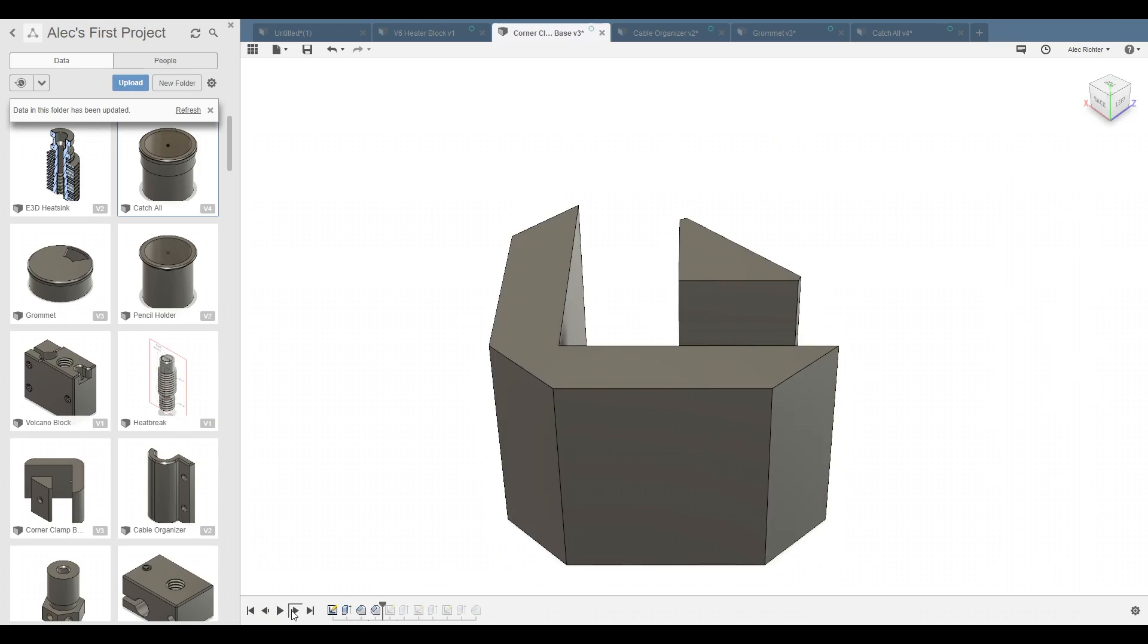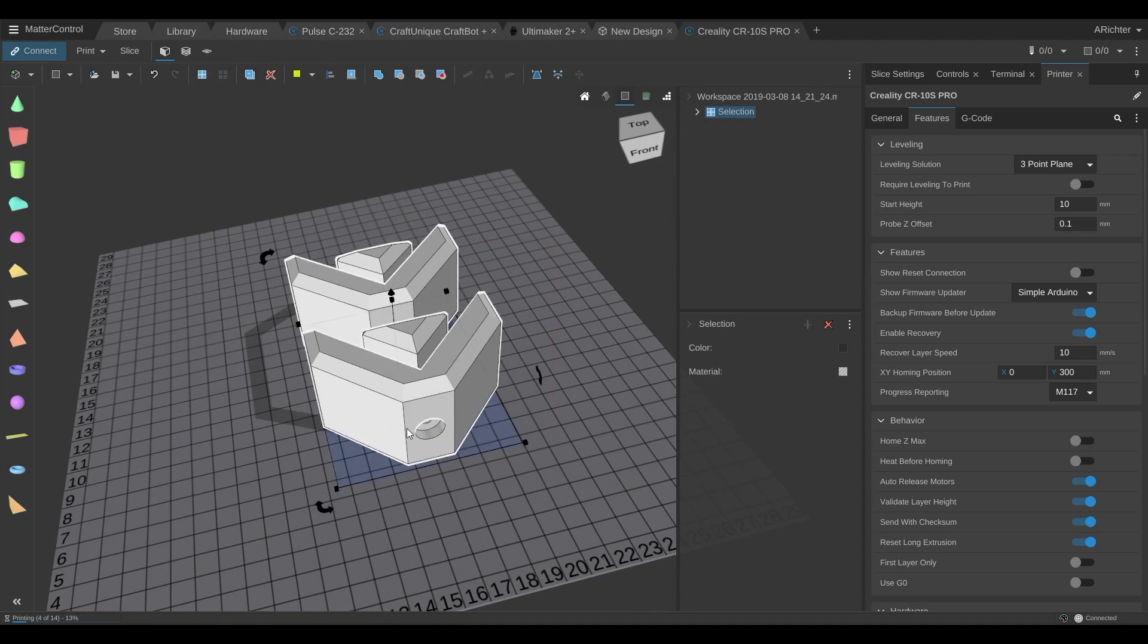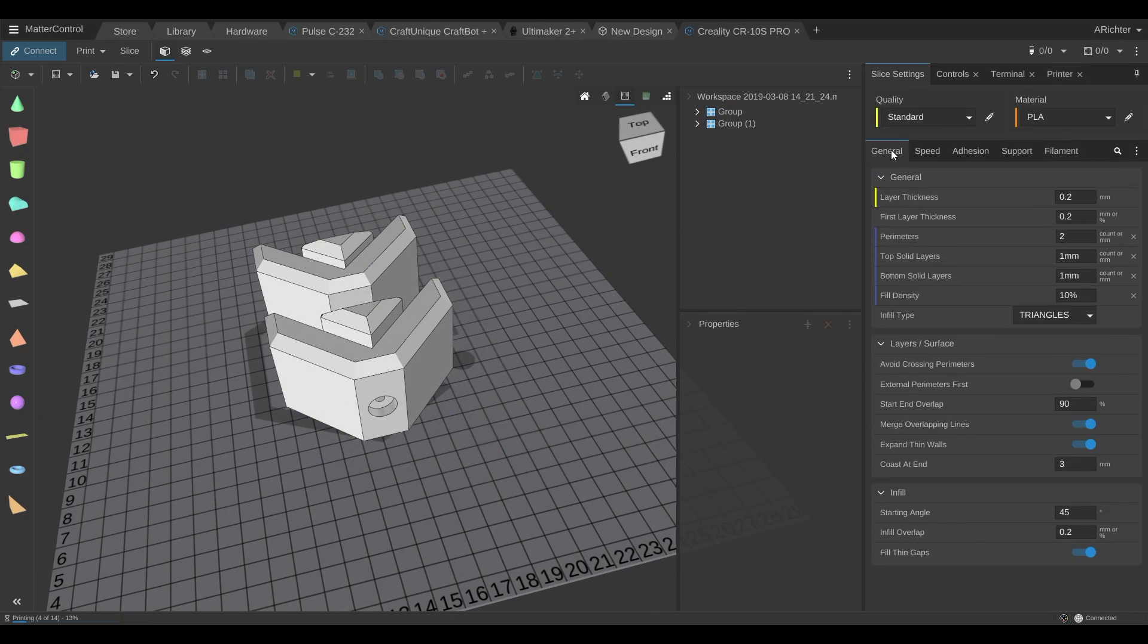I jumped into Fusion 360 and modeled up the clamps that would hold the two boards together. Didn't have to look pretty, just had to work, but I still added some chamfers anyways. From there I dropped into MatterControl and set up two of them so I could do a batch print, and from there I could start messing with the print settings to prioritize strength.